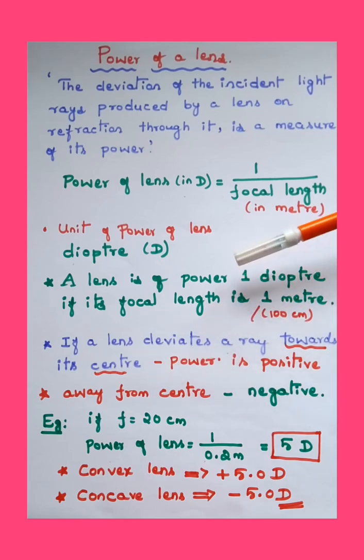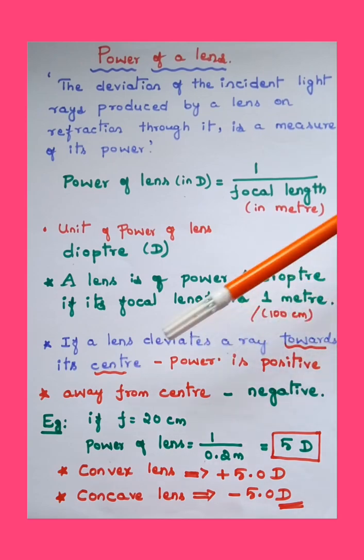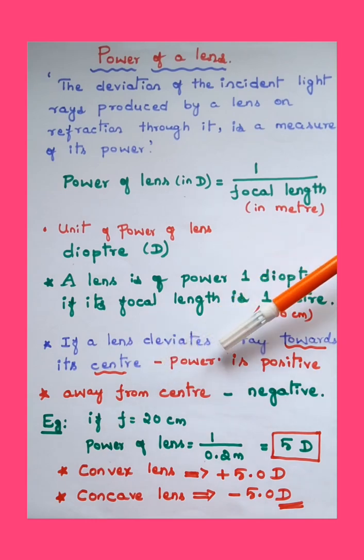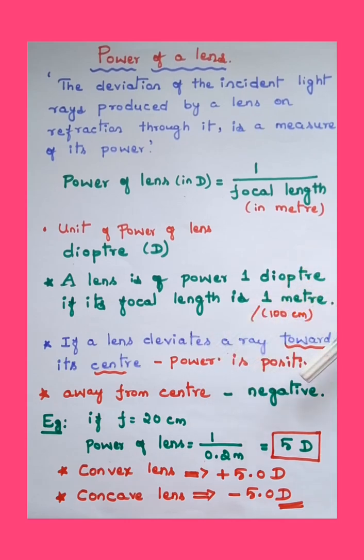If a lens deviates the light ray towards its center, its power is positive. If a lens deviates light ray away from the center, its power is negative. Don't get confused with the magnification or linear magnification of the lens. The power of the lens is simple - if a light ray deviates towards the center, power is positive; if it is away from the center, power is negative.